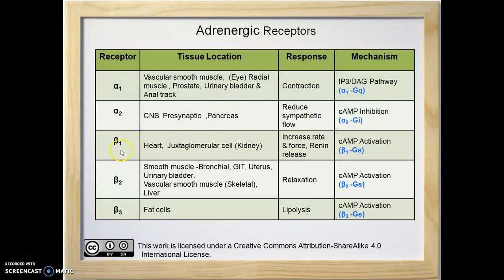When beta-1 receptors in the juxtaglomerular cells of the kidneys are stimulated, they cause renin release. Release of renin stimulates the production of angiotensin II, which causes vasoconstriction and retention of fluids.